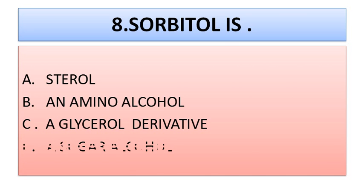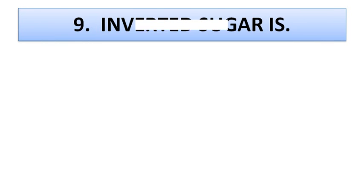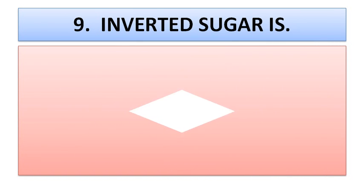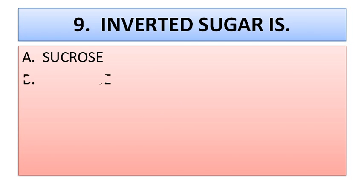Question number eight: sorbitol is — option A: a sterol, option B: an amino alcohol, option C: a glycerol derivative, option D: a sugar alcohol. Option D is correct — sorbitol is a sugar alcohol which is found in fruits and many plants.